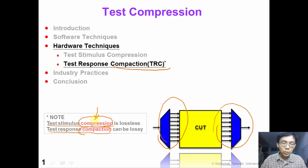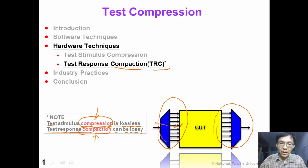We use two different words because for test stimulus compression the information must be lossless — when we want a specified bit, it cannot be changed. However, for test response compaction the information can be lossy. That means we don't have to compress every bit of the CUT output; we can ignore some of the CUT output as long as our fault coverage is not changed.